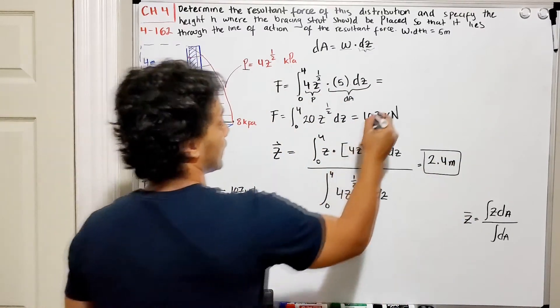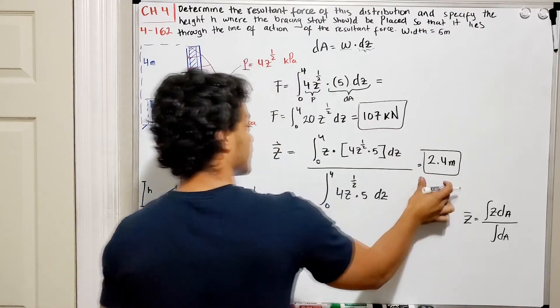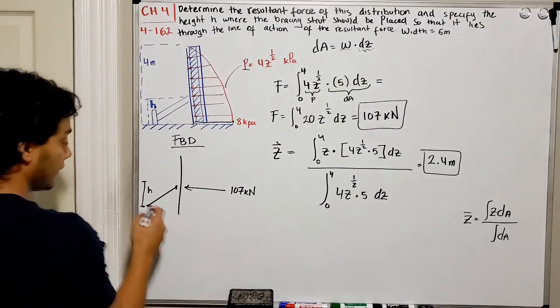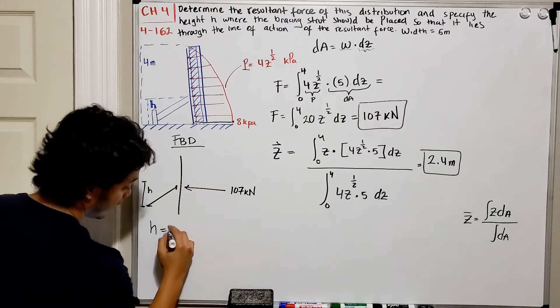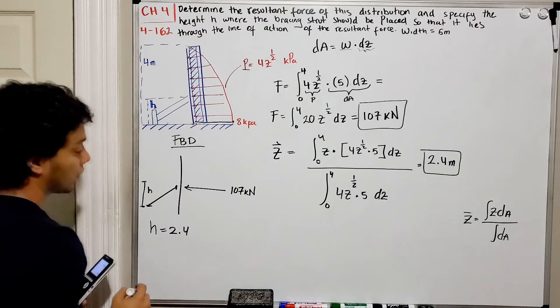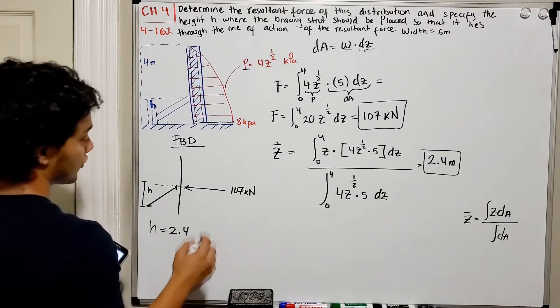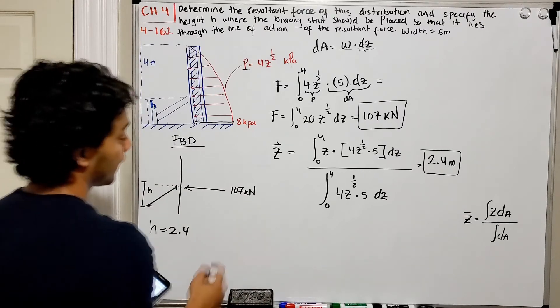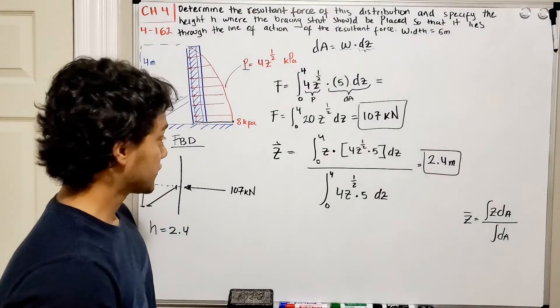We found our magnitude, and we found where this force is placed. Therefore, our H, our distance H for our bracing thrust, is going to be the same one, because that's what the problem wanted. They wanted to place our bracing thrust in the same line where my horizontal force was placed.